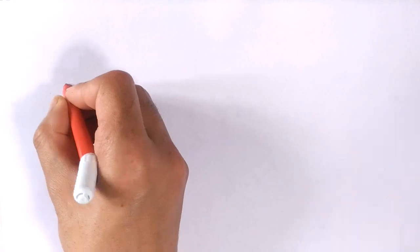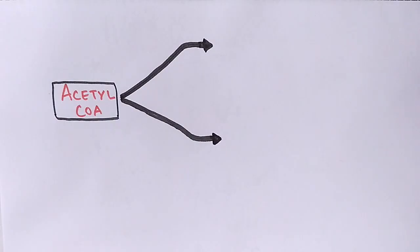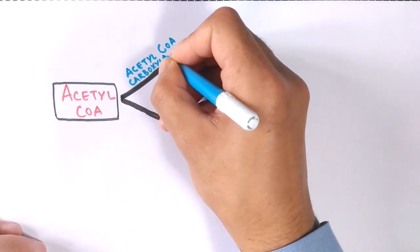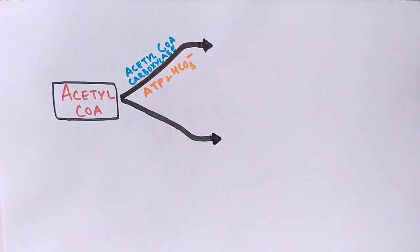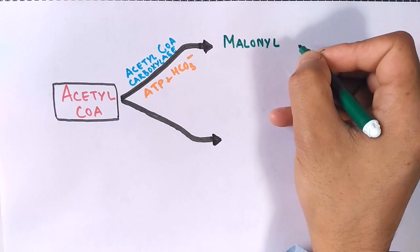So now we have the acetyl-coenzyme A molecule present in cytosol. It goes into two pathways, or we can say when it's acted upon by different types of enzymes, it gives us two types of molecules. First of all, when this acetyl-CoA is acted upon by acetyl-CoA carboxylase in presence of ATP and HCO3 (bicarbonate ions), it gives us malonyl-CoA.